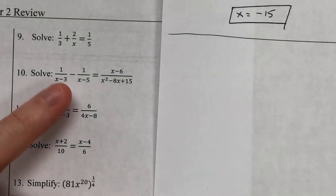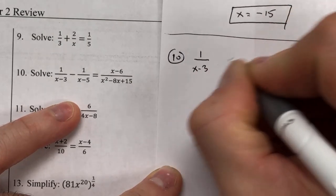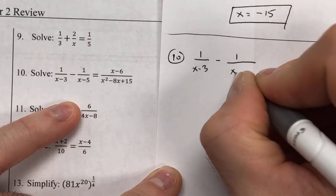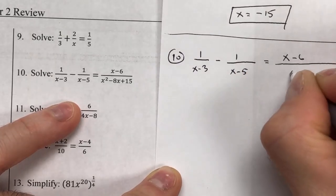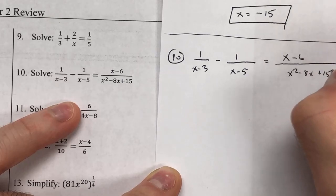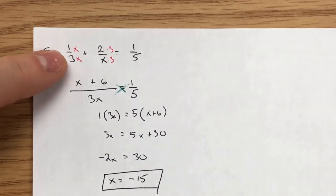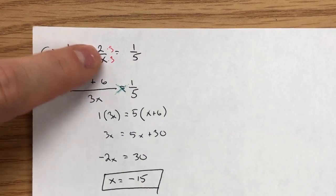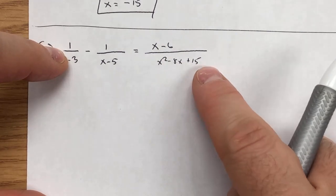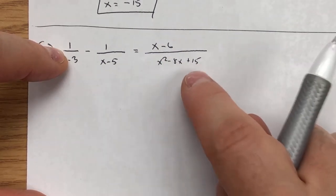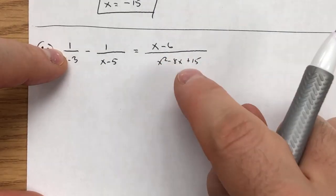Moving on to number 10, we have a more complicated but structurally identical problem — a fraction minus a fraction with a different denominator equals a fraction on the right. The setup is the same: two fractions on the left, one on the right, no common denominators yet. One additional thing is that I have a quadratic in the bottom, so my first thought is: can I factor it?